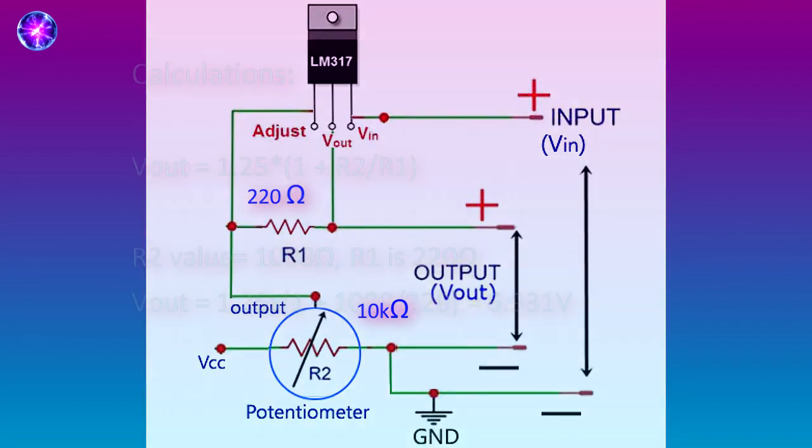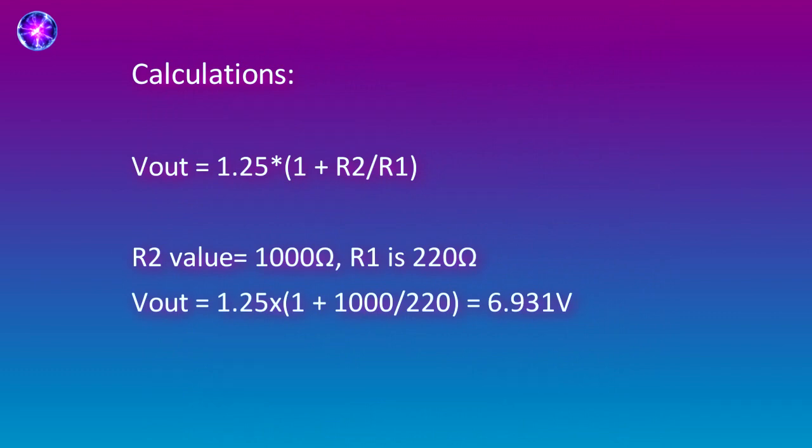Furthermore, you can calculate the voltage output depending upon the resistor values of R1 and R2 by using this given formula for calculation. Here 1.25 is the starting range for output voltage as per LM317 regulator. After giving these resistor values, we can determine the output voltage we can get.